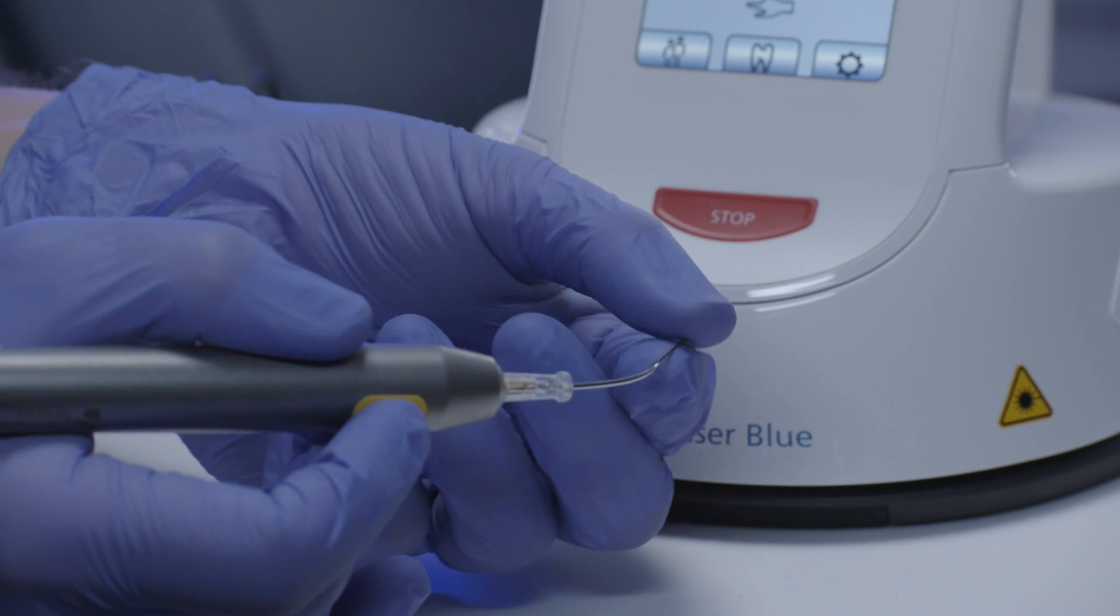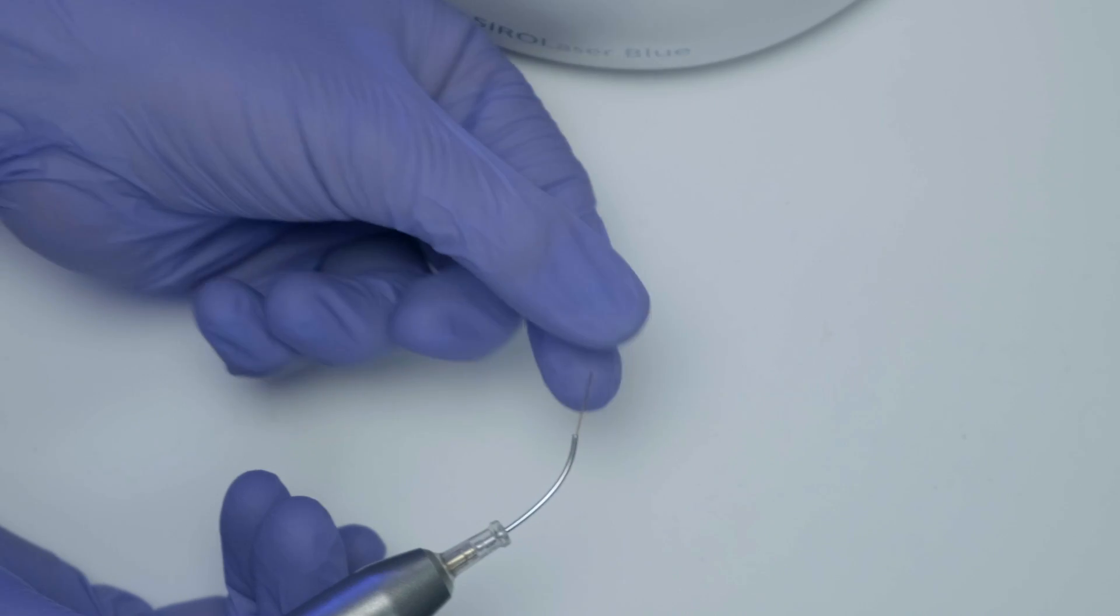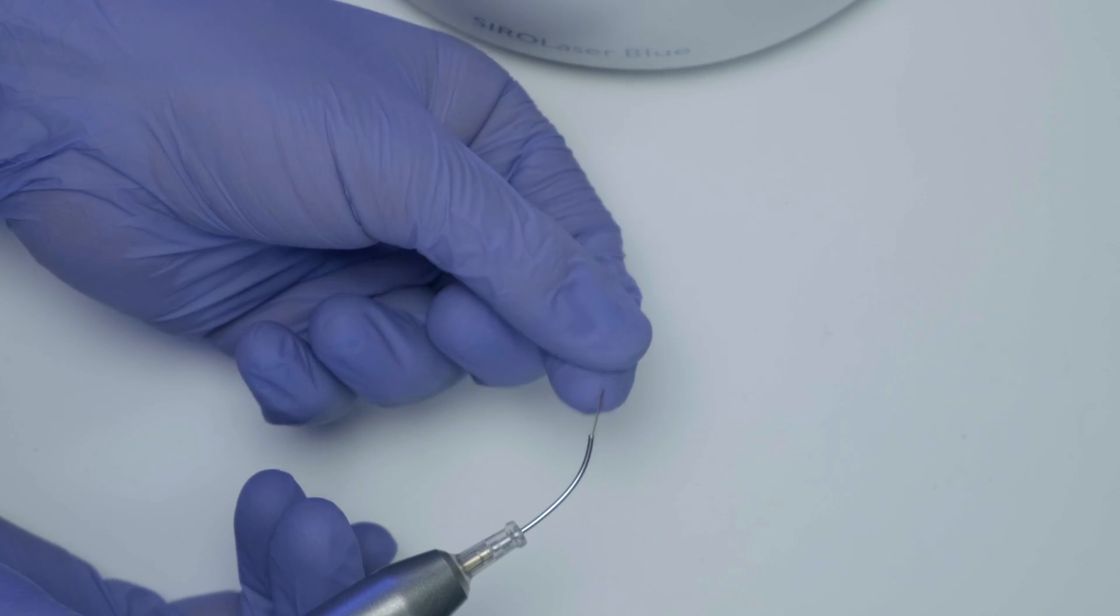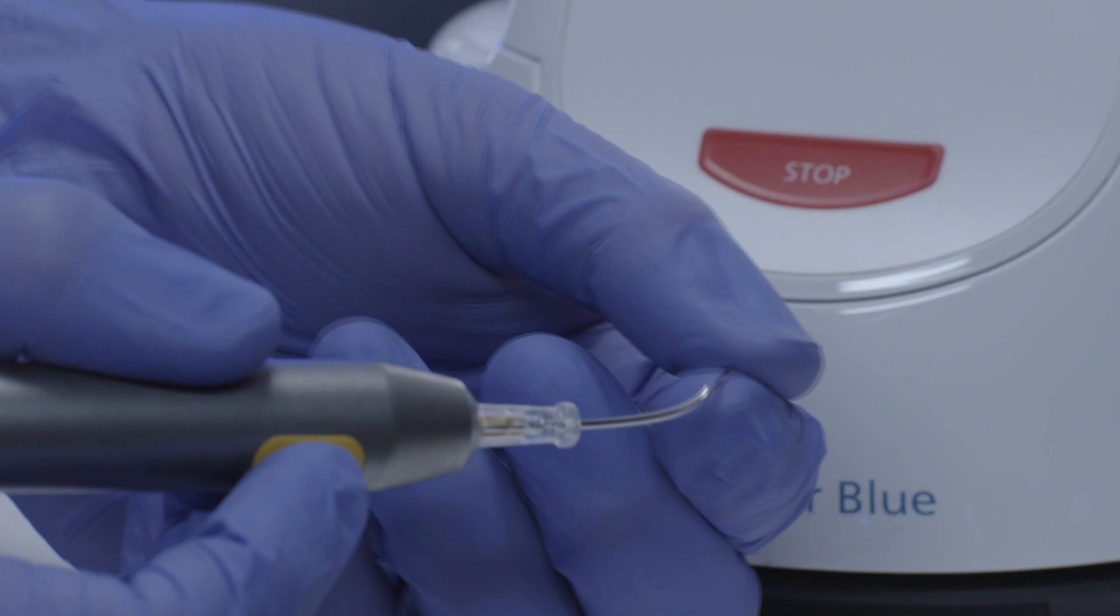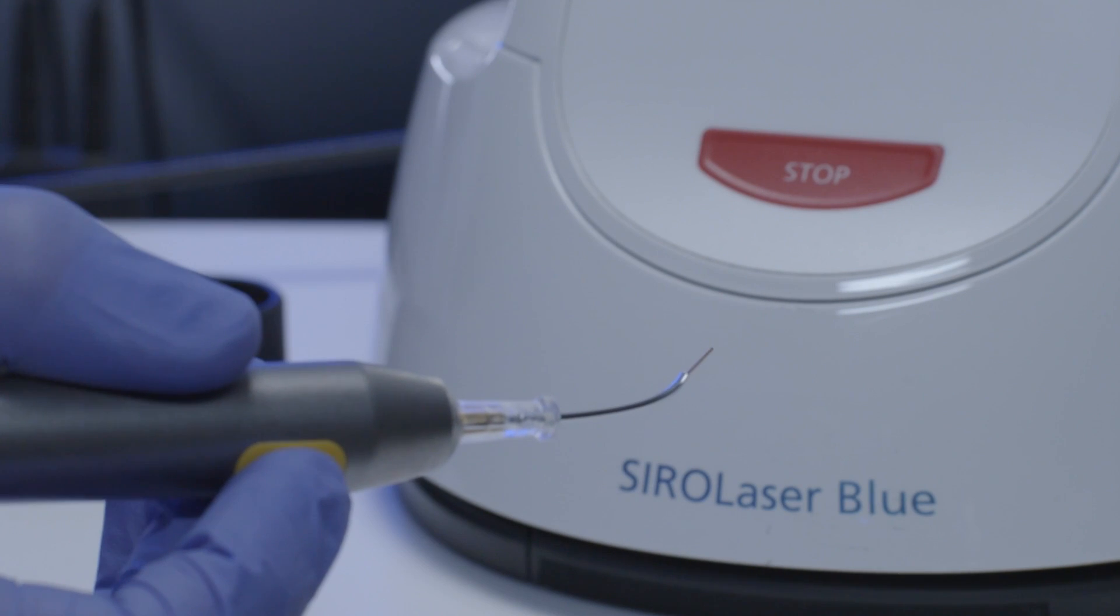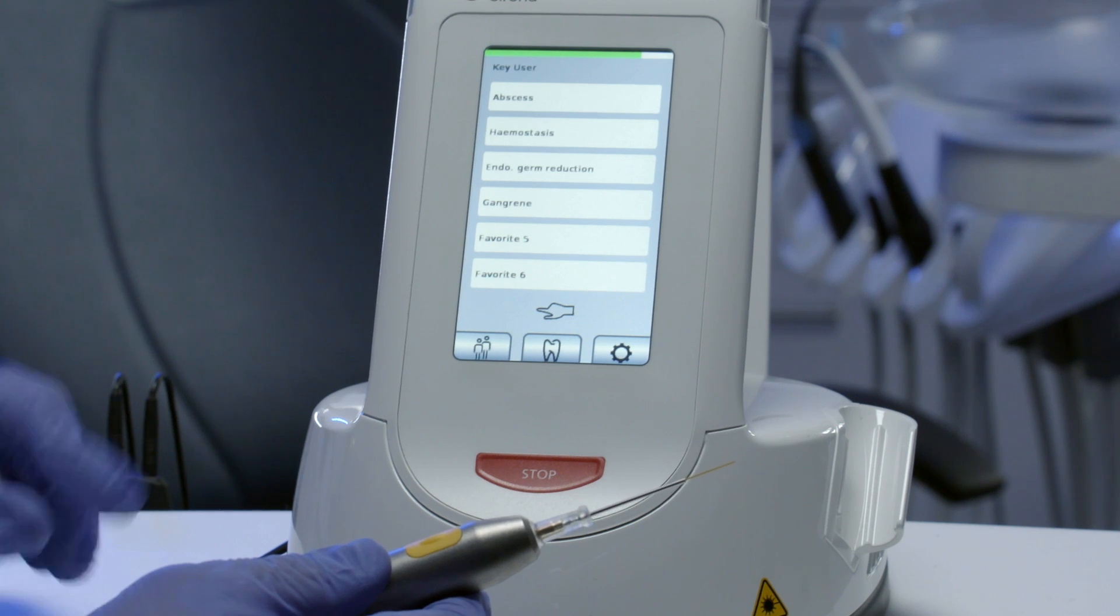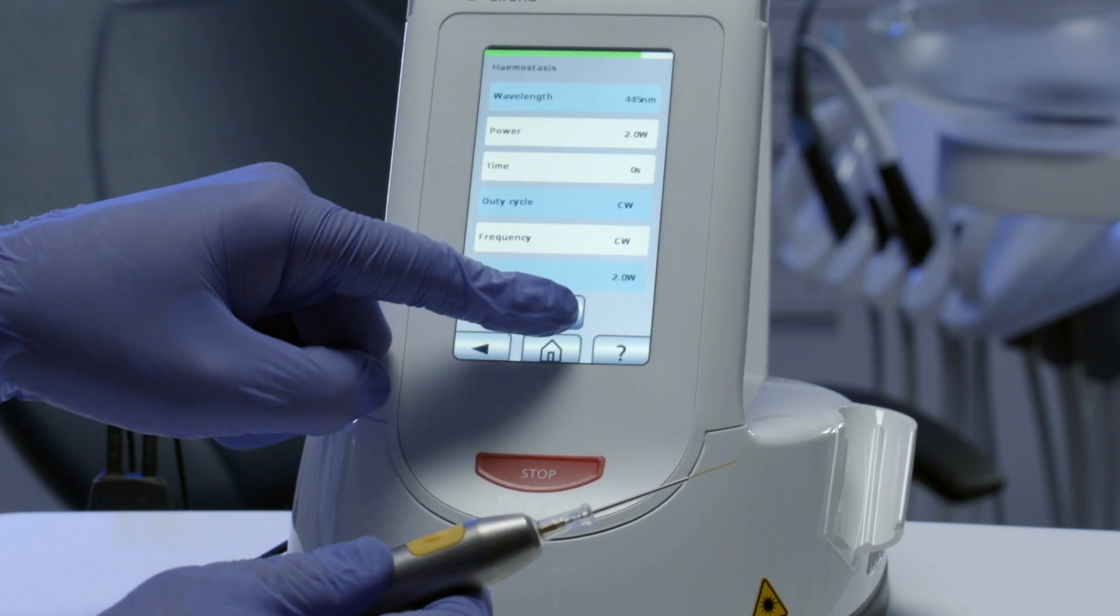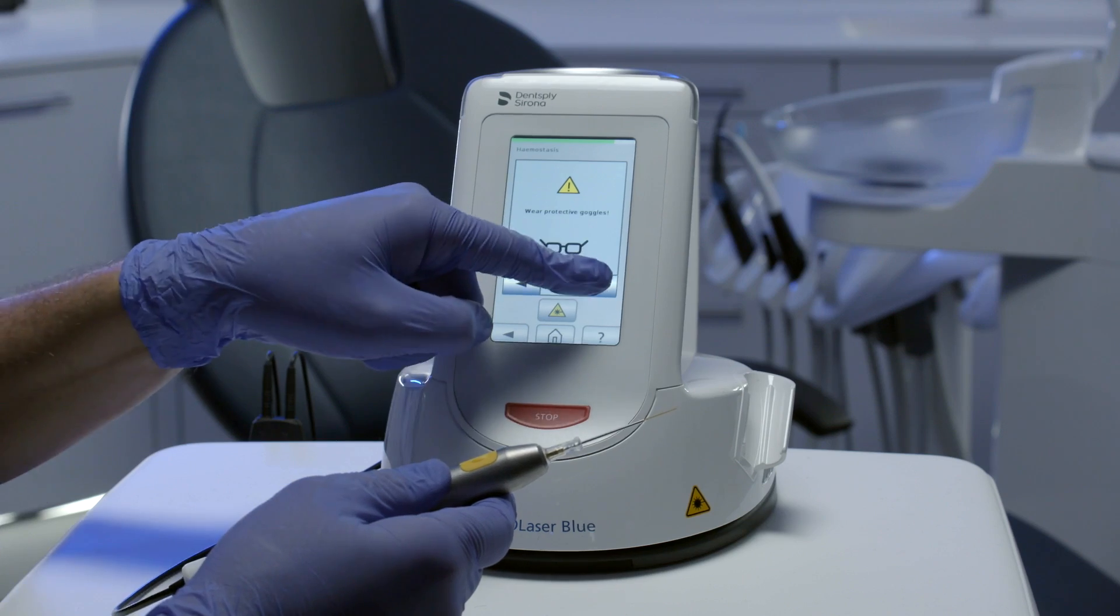Then bend the optical fiber at the notched location. It will break at the notch location with a smooth perpendicular fracture surface. The cleaving was successful if the light of the aiming beam projects a uniform circular pattern.